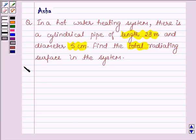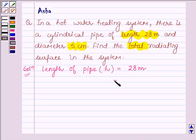Let us now start with the solution. Here we are given the length of pipe, denoted by h, equals 28 meters, and this equals 28 into 100 centimeters, since 1 meter equals 100 centimeters. Therefore, changing 28 meters into centimeters gives 2800 centimeters.